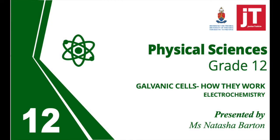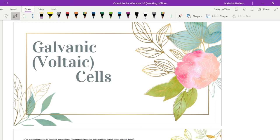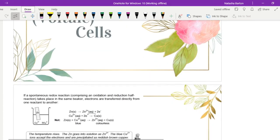Hello Grade 12s, and welcome to this video on galvanic cells, also known as voltaic cells. In this video we're going to look at what these cells are and the structure — what different parts of galvanic cells are there for, what purpose they serve, why we have a salt bridge, why we have electrodes. To bring things into context we're going to be looking at the zinc-copper galvanic cell, which is the one used in your textbook.